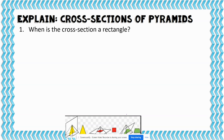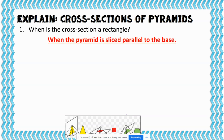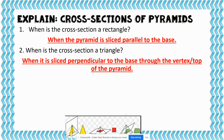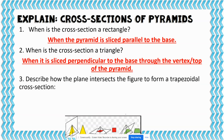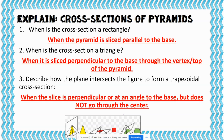For pyramids, the cross-section would be a rectangle if the pyramid is sliced parallel to the base and the base is a rectangle. The cross-section would be a triangle when it is sliced perpendicular to the base through the top. It could form a trapezoidal cross-section when it is perpendicular or at an angle to the base but does not go through the center — meaning it doesn't pass through the top point — giving you a trapezoid.